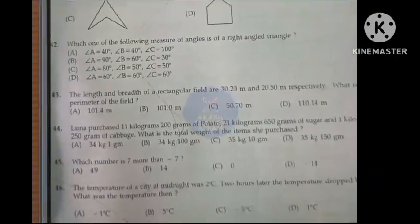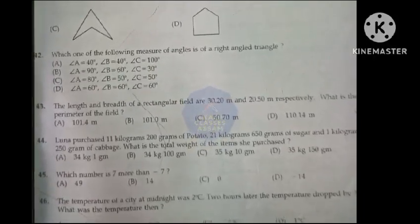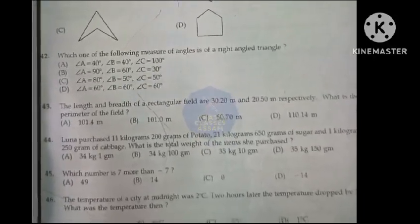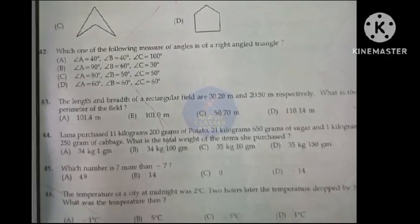Option C, 0. The temperature of a city at midnight was 2 degree Celsius. 2 hours later the temperature dropped by 3 degree Celsius. What was the temperature then? Option A, minus 1 degree Celsius.